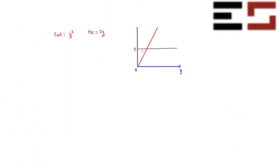Suppose I choose a quantity below the intersection. The cost at this quantity is the area under the MC curve, and the revenue is the area under the MR curve. The difference — which I'll shade in blue — is the profit at this quantity.